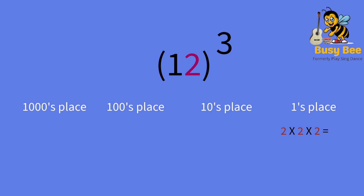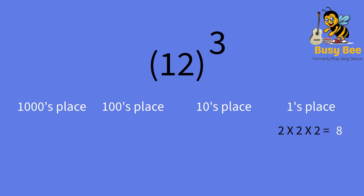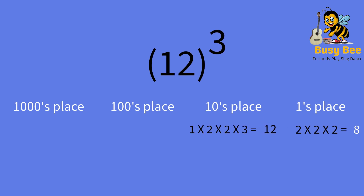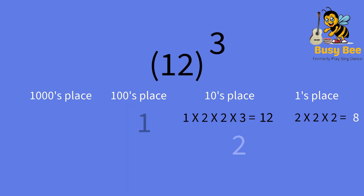First, we will take the 2 three times and multiply them. The ones place answer is 8. Now, we will take the tens place number, multiply it with the ones place number, multiply it again with the ones place number, then multiply it by three. The answer is 12. We take the 2 as the tens place answer and move the 1 to the hundreds place.